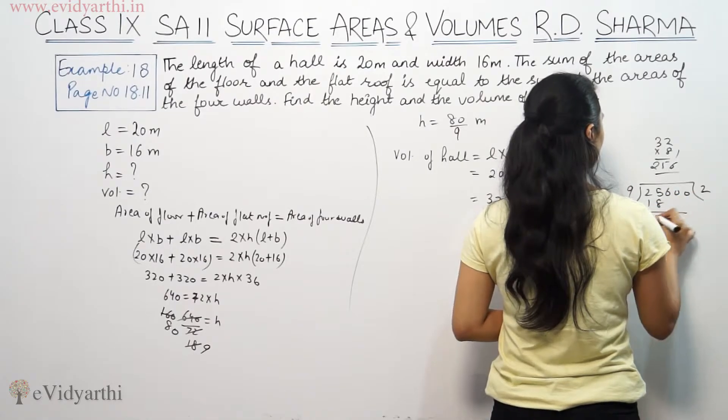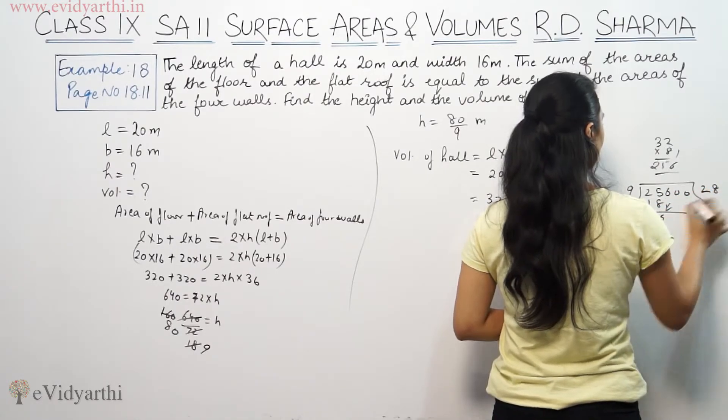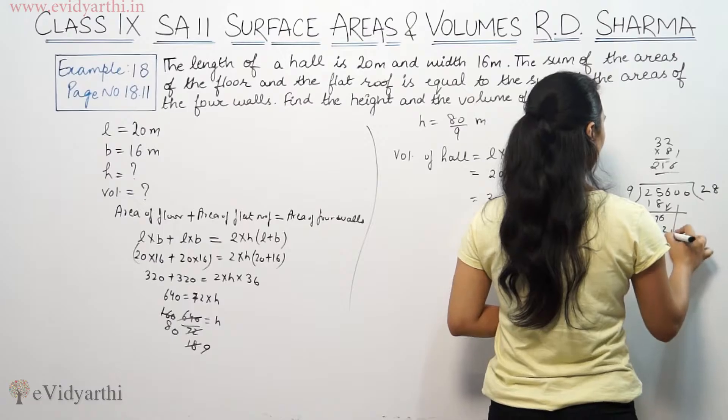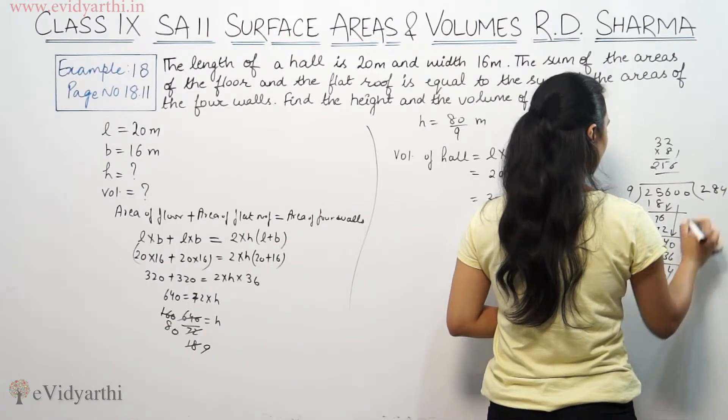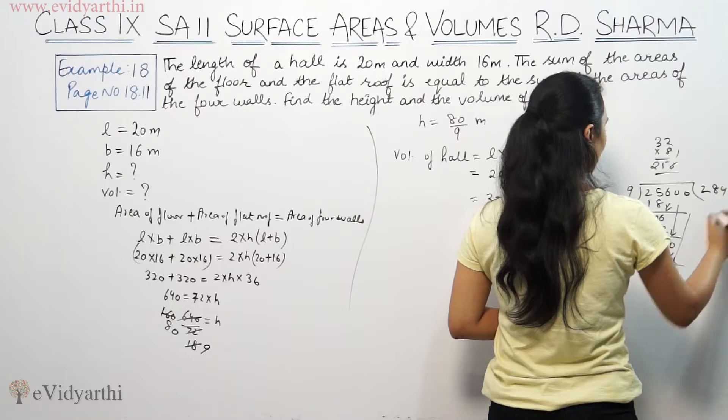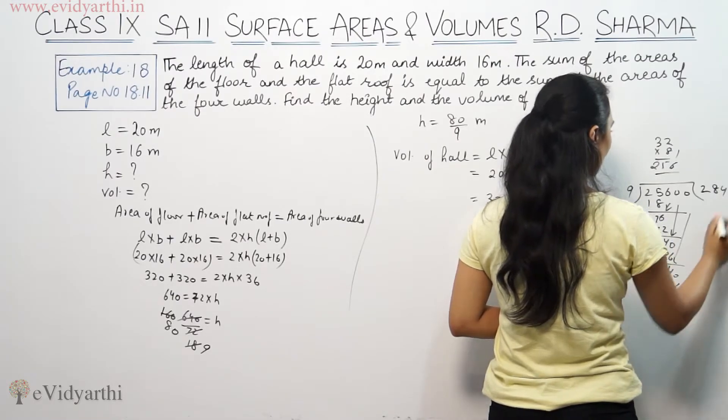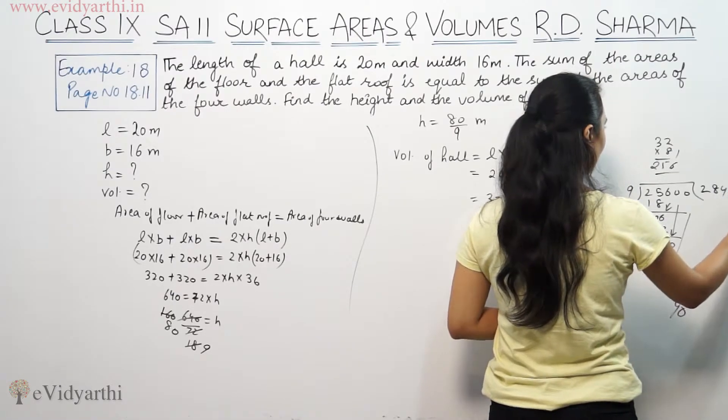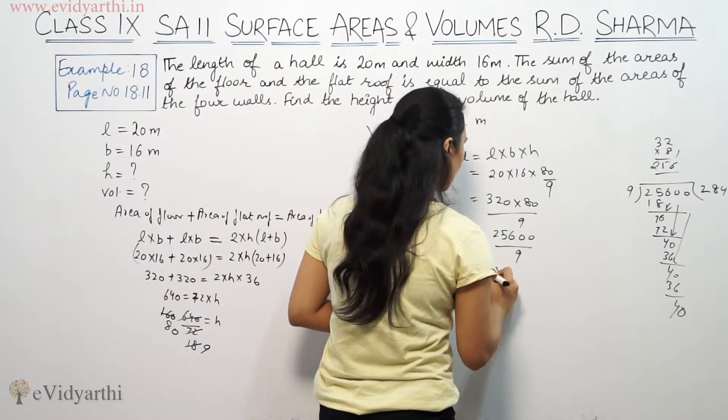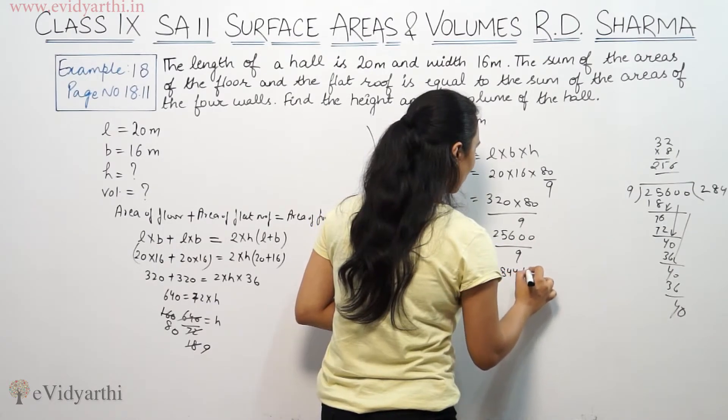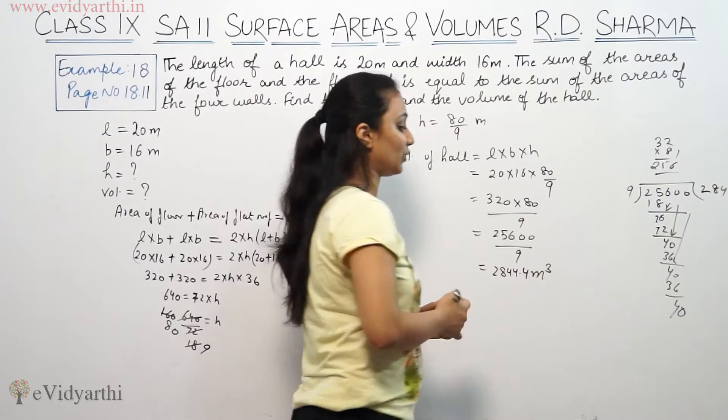Dividing 25600 by 9, we get 2844.4. This is 2844.4 meter cube. This is the volume.